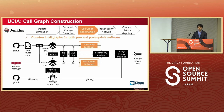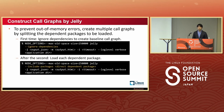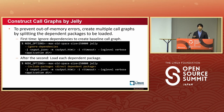In the third stage, we construct the call graphs. To do this, we use Jelly. Jelly is a static analyzer for constructing call graphs for JavaScript and TypeScript on the Node.js platform, based on academic studies. Jelly is a bit tricky — to prevent out-of-memory errors, we create multiple call graphs by splitting the dependent packages to be loaded. First, we ignore dependencies to create a baseline call graph. Then in subsequent loops, we load each dependent package and merge them later. Here is an example of Jelly's HTML output.